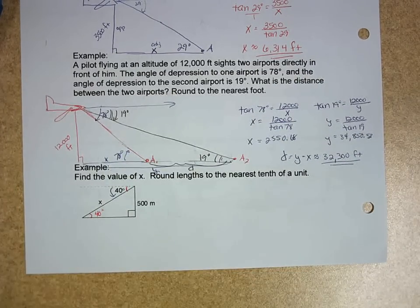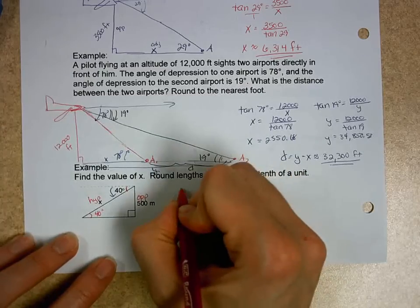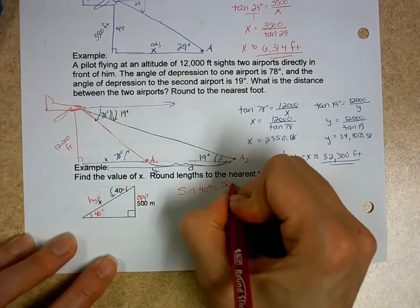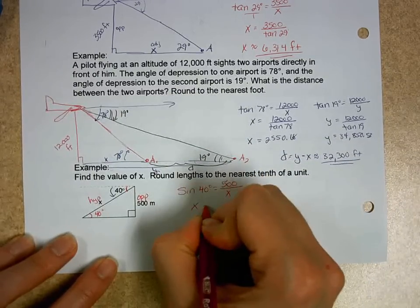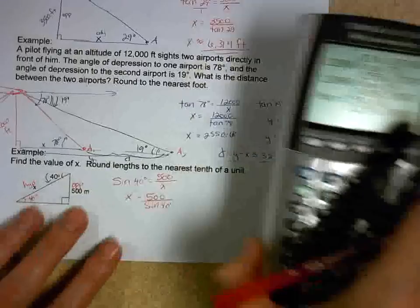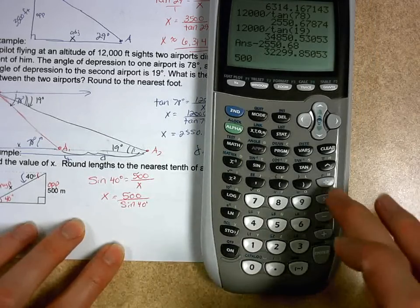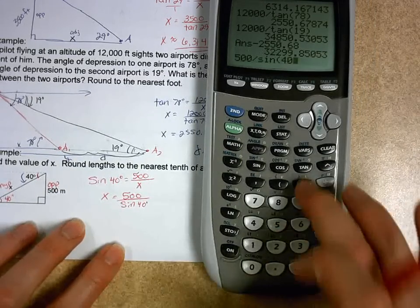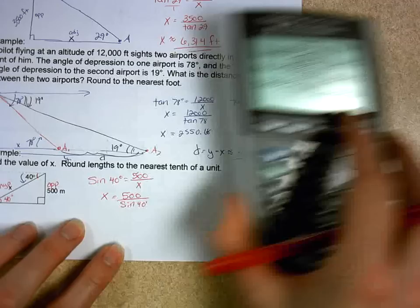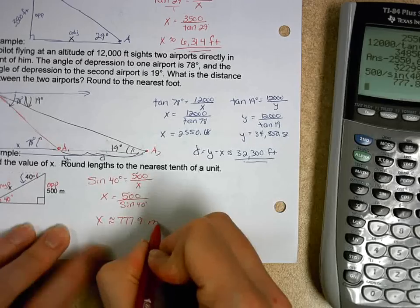We're going to still solve for x. Looking at this, this is my opposite, this is my hypotenuse. I'm going to use sine this time. The sine of 40 degrees equals opposite over hypotenuse. Flip-flop. I want this to the nearest tenth of a unit, so there's a decimal spot on this one. 500 divided by the sine of 40 should be 777.9 meters.